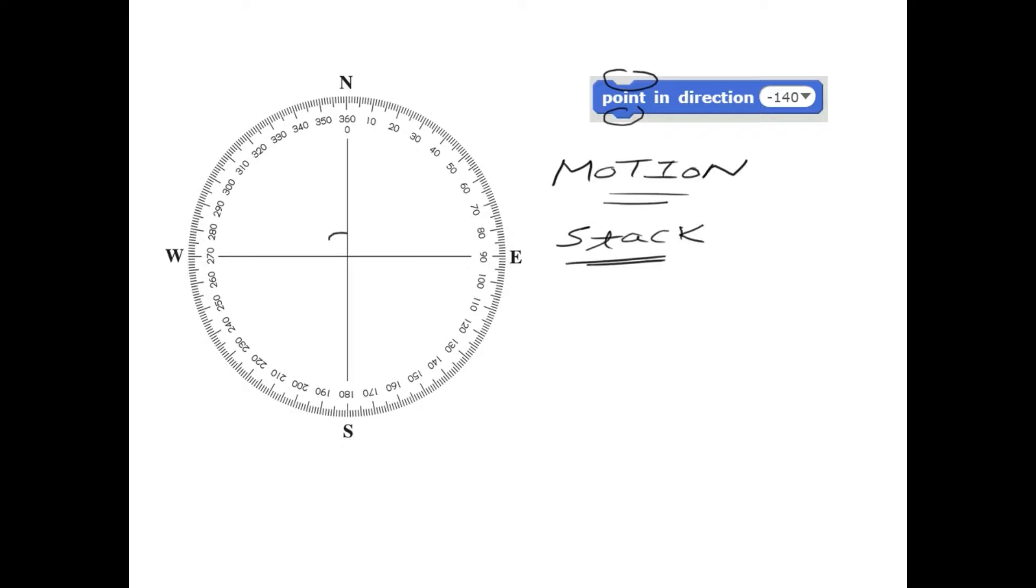You have a circle as we know now that every circle has a total of 360 degrees. You have a sprite, let's say you have a cat on your stage or any other sprite. By default, it is pointing toward 90 degrees. When you use a move block, it will move toward the 90.